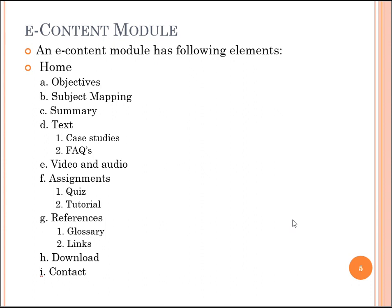The e-content module is comprised of the following elements: firstly the objectives, secondly the subject mapping, then the summary of that subject, textual matter including case studies related to the subject and frequently asked questions. The whole e-content for the subject should include video as well as audio. Next comes the evaluation part, which comprises assignments in the form of quizzes and tutorials. Then come the references, which contain the glossary and links. Lastly, downloads and the contact list for that particular course.